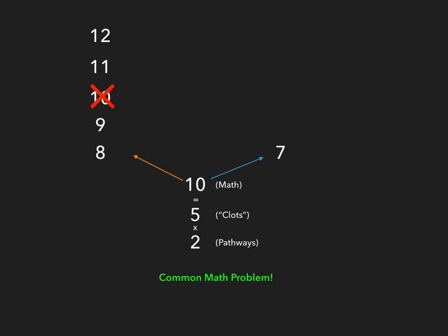To review: there were two major pathways, so we wrote down the number 2. We multiplied that by 5 because we're trying to form clots and there are five letters in the word 'clots,' and that equals 10. In the orange pathway we counted down from 12 to 8, but we crossed out 10 since it was already used. The next number left over, 7, went on the right side — the blue pathway. These are our two pathways.